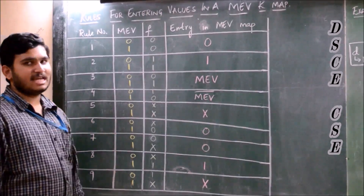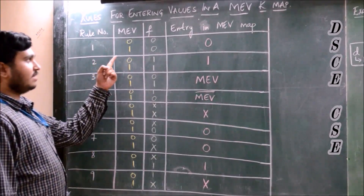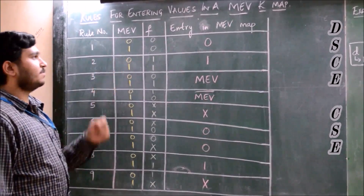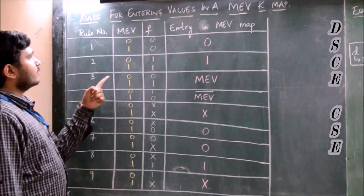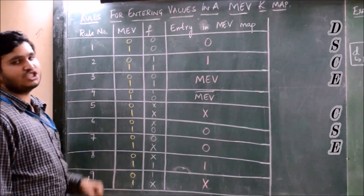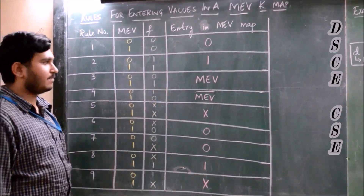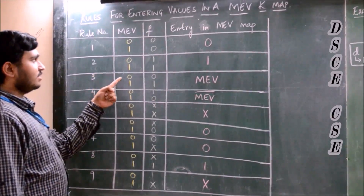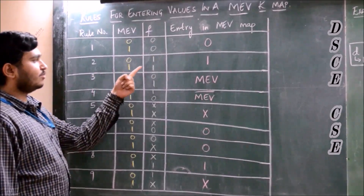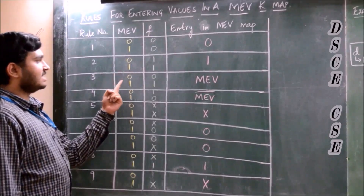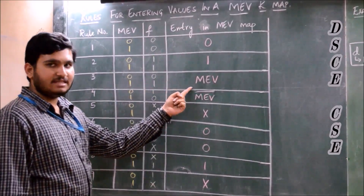Let us see the rules for entering values in the map entry variable (MEV). Rule 1: for both values of the MEV, if the functional output corresponds to 0, then we enter 0 in the MEV map. Rule 2: for both values of the MEV, if the functional output corresponds to 1, then we enter 1. Rule 3: if the MEV is exactly equal to the functional output, we enter MEV in the map.